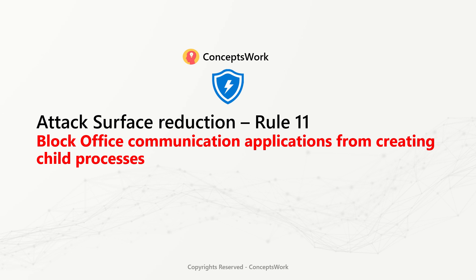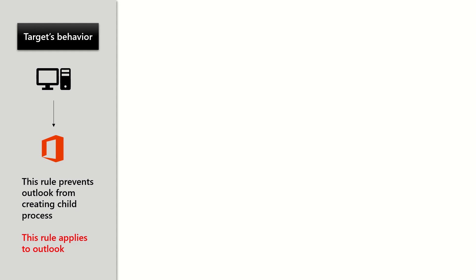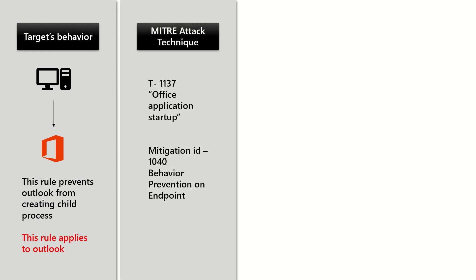Attack Surface Reduction Rule 11 blocks Office communication applications from creating child processes. This rule typically applies to Outlook, preventing it from creating child processes. The attack technique targeted is T1137 - Office Application Startup.